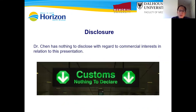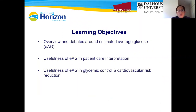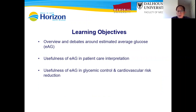I have nothing to disclose related to commercial interests related to this presentation. There are three objectives. Number one, I'd like to overview and debate around estimated average glucose, EAG, with you. Number two, I'd like to discuss the usefulness of EAG in patient care interpretation. And lastly, I'd like to discuss the usefulness of EAG in glycemic control and cardiovascular risk reduction.